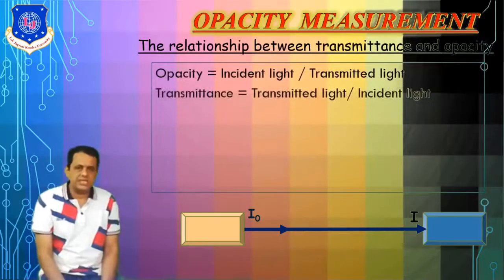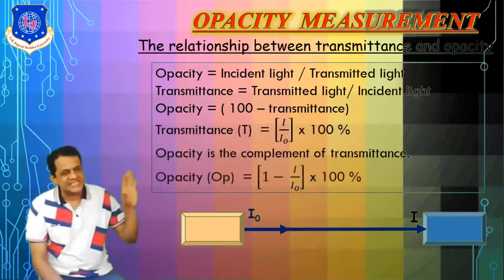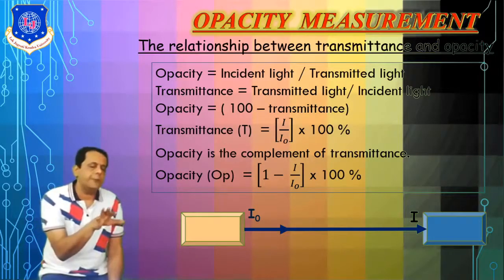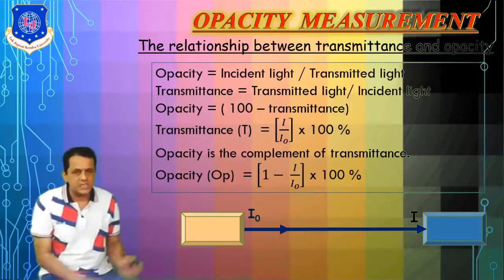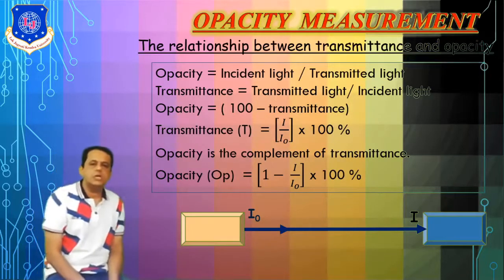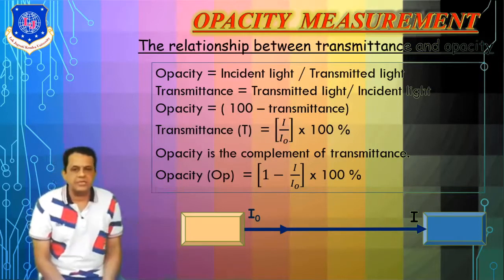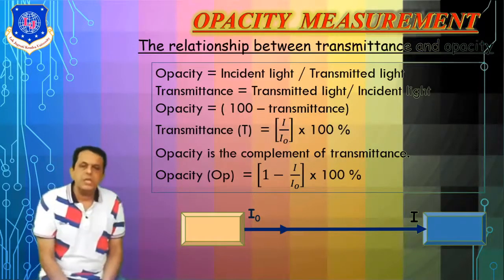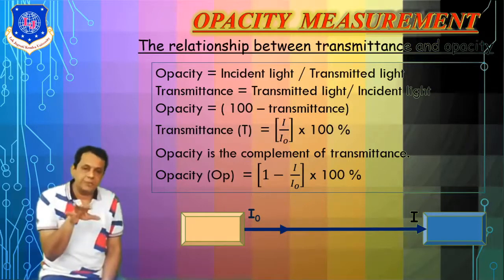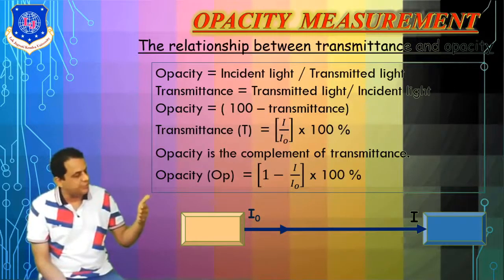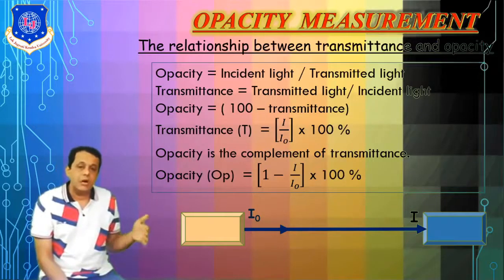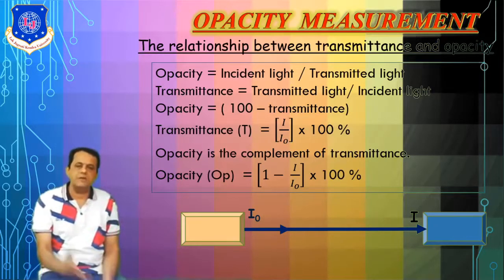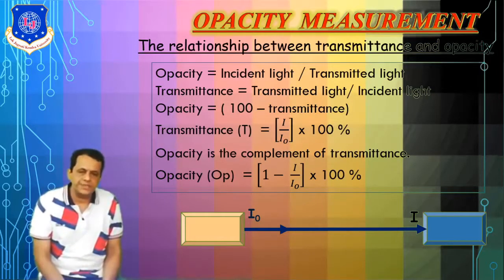Now let us see the relationship among these terms. Opacity is the ratio of incident light to transmitted light, and transmittance is the ratio of transmitted light to incident light — that is I divided by I₀. Opacity equals 100 minus transmittance. Opacity shows how much light is dropped, and transmittance shows how much is passed. So opacity is the inverse of transmittance: opacity = (1 − transmittance) × 100, expressed as a percentage.